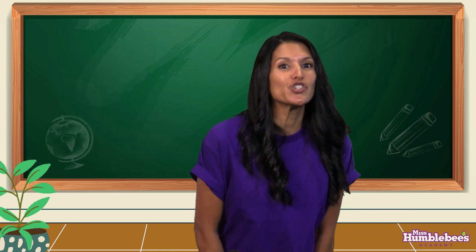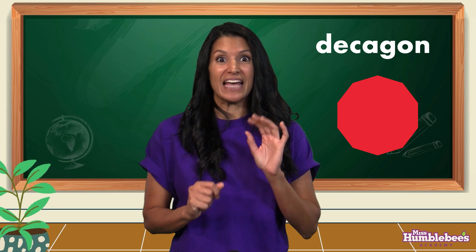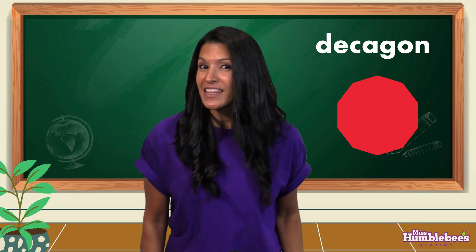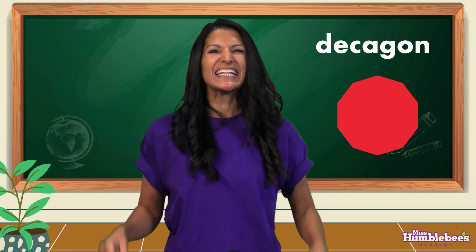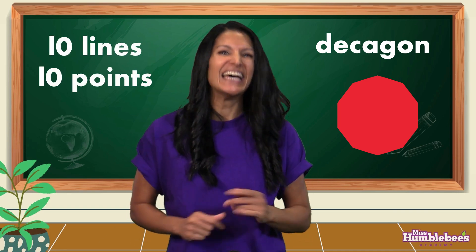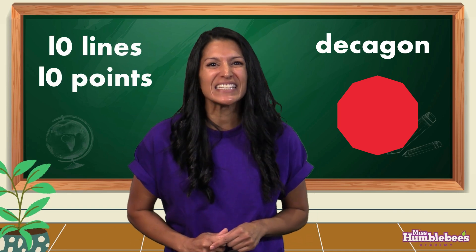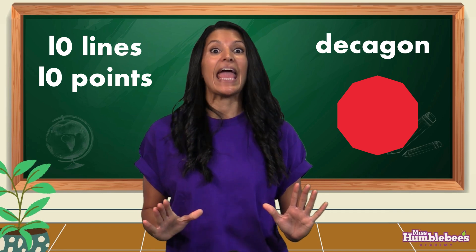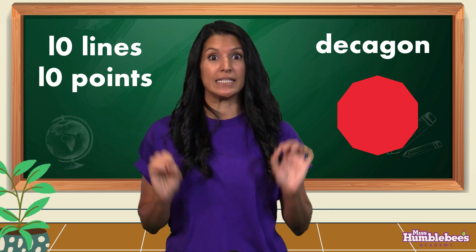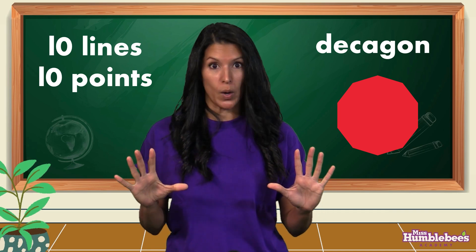So, the decagon has how many lines and points? Ten! That's right! We counted ten lines and we counted ten points.